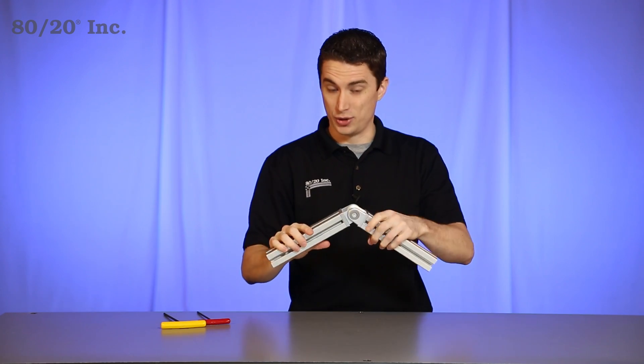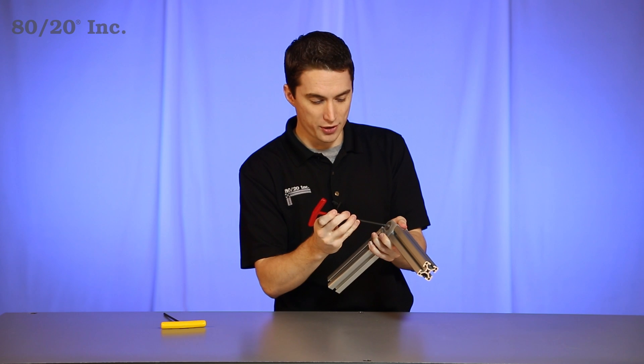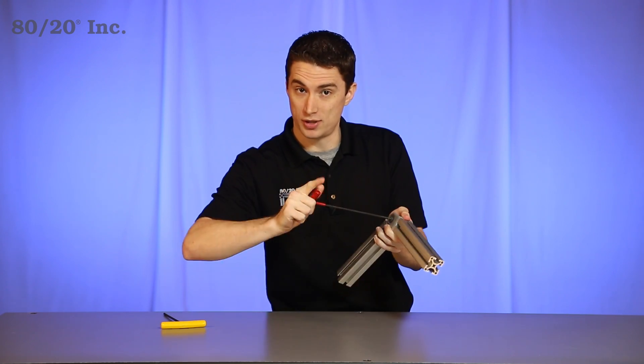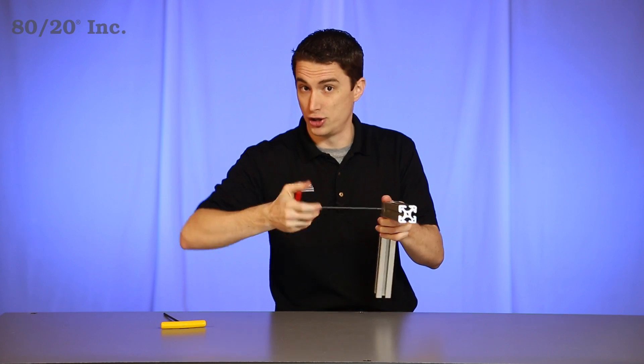Once you have that done, the last thing to do is pick your angle. Once you have that angle picked out, take your other wrench and tighten down those bolts on the pivot joint itself. That locks the angle into place and gives you a strong, secure connection.